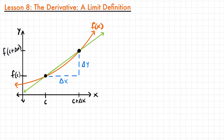We can use the information of the slope of that tangent line at a point to better explain the behavior of a function at certain points we may be interested in. What we are in search of is a way to find that slope of the tangent line for any function at any point, which can sometimes prove to be a difficult task. To do that, we are going to use limits, which is all we have talked about so far.